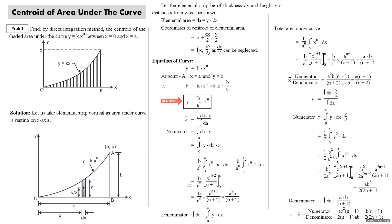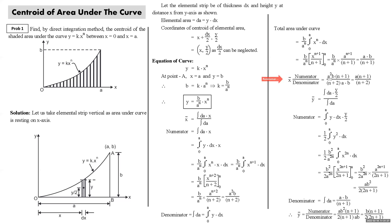Integrating x^(n+1) gives x^(n+2)/(n+2). With limits 0 to a, the numerator becomes (b / a^n)·[a^(n+2)/(n+2)] = a²b/(n+2). The denominator is the total area: integrating y dx = (b / a^n)·x^n dx from 0 to a gives (b / a^n)·[a^(n+1)/(n+1)] = ab/(n+1). Therefore, x̄ = [a²b/(n+2)] / [ab/(n+1)] = a(n+1)/(n+2).